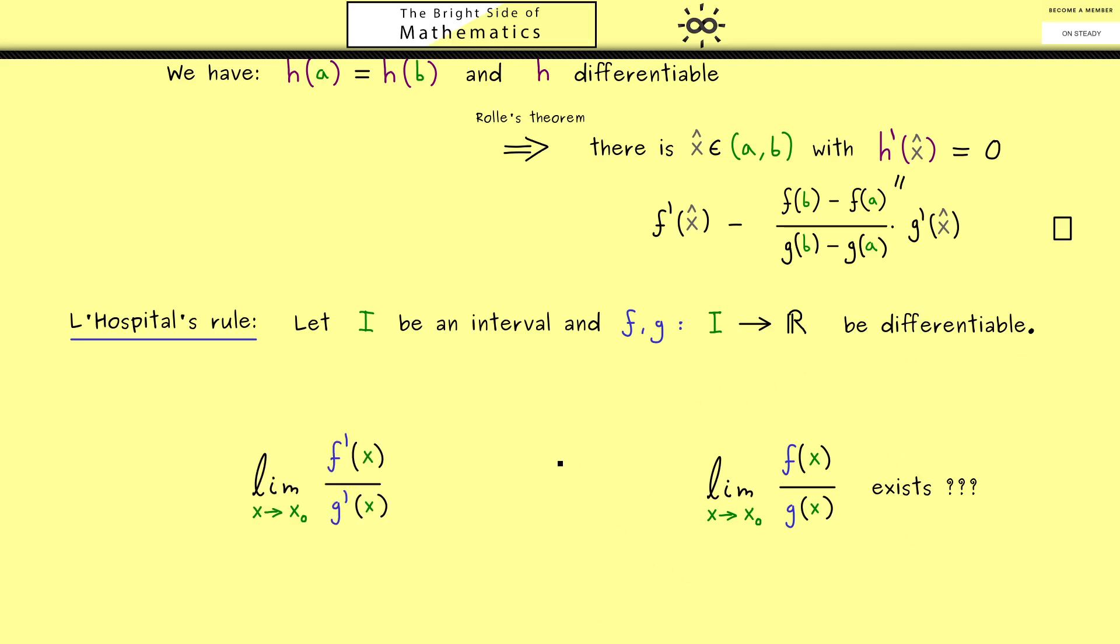Because in this case we can also look at the derivatives in the limit. However now you see we need way more assumptions that all of these limits make sense. First of all we have to fix our point x₀ from the interval I. And then you should note that in most cases we can immediately calculate this limit here. Simply because we have continuous functions involved. The only case where the question occurs if this limit exists at all is when f(x₀) and g(x₀) are both 0.